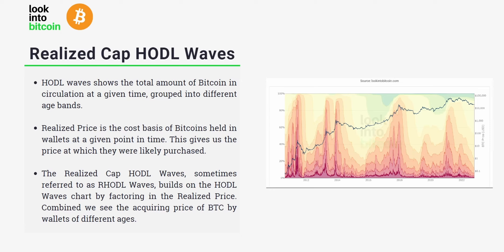To summarize, the Realized Cap HODL waves is comprised of two different charts in essence. The HODL waves, which shows us the total amount of Bitcoin in circulation at any given time grouped into different age bands. It is also using the Realized Cap, which is the cost basis of Bitcoins held in wallets at any given point, giving us the price at which each Bitcoin was likely purchased — often referred to as a fair value representation of the Bitcoin price. So the Realized Cap HODL waves, sometimes referred to as the R-HODL waves, factors in both of these indicators and combines them to see the average acquisition price of Bitcoin by wallets of different ages.